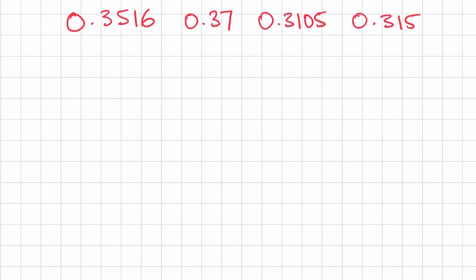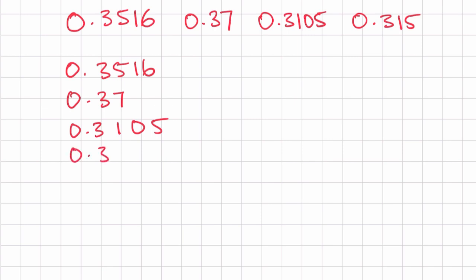We are going to stick to our rules. First, let's list these numbers in a column: 0.3516, 0.37, 0.3105, and 0.315. To make it easier to compare, we are going to add zeros so there are the same number of digits after the decimal. Adding a zero doesn't change the value of the number because it is after the decimal point.